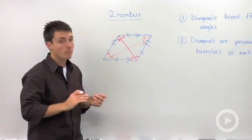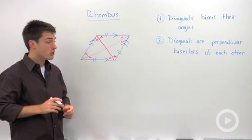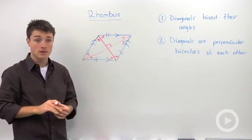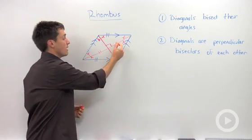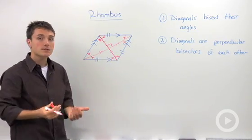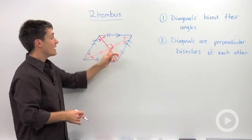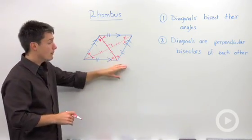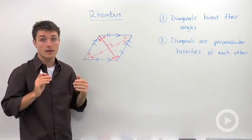Another key thing is that the diagonals are perpendicular bisectors of each other. So they will always intersect at a 90 degree angle, and they're going to bisect each other. So the diagonals of a parallelogram bisect each other, but they don't necessarily intersect at a right angle. A rhombus, it has to intersect at a 90 degree angle.